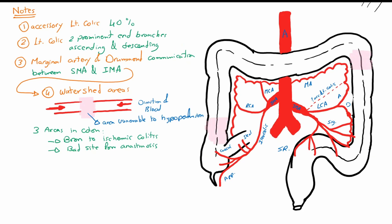Other watershed areas of the colon include, in addition to the splenic flexure, the sigmoid colon between the sigmoidal branches and the superior rectal branches, and the ascending colon between the right colic branches.